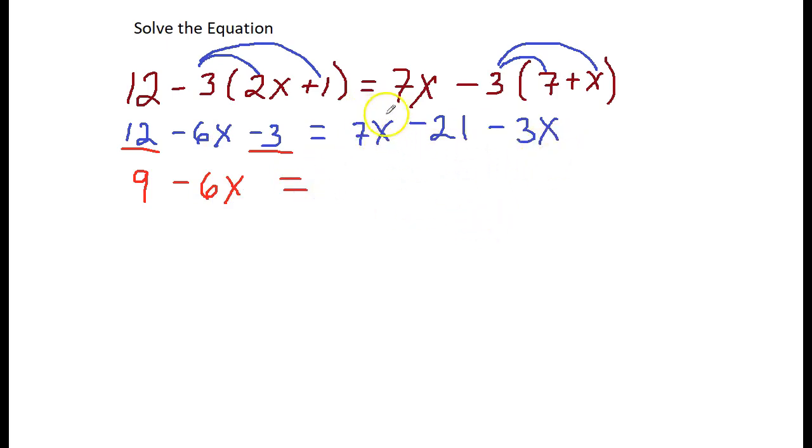Now on the right side, my 7x and my negative 3x are like terms because they both have x's, but the 21 does not have an x so I cannot add it to those. 7x plus negative 3x, or you could say take away 3x, leaves you with 4x. Bring down the negative 21.